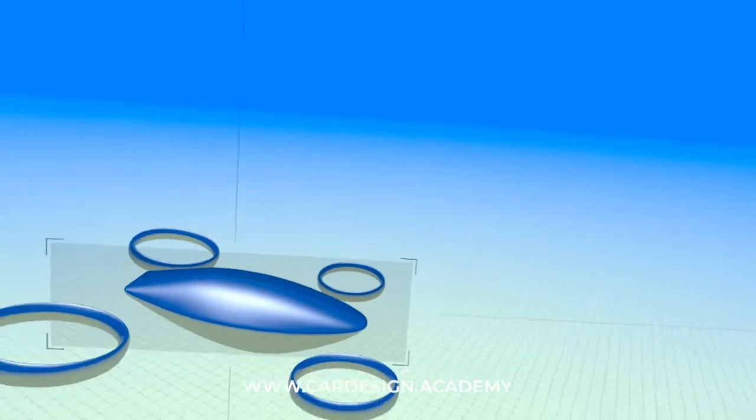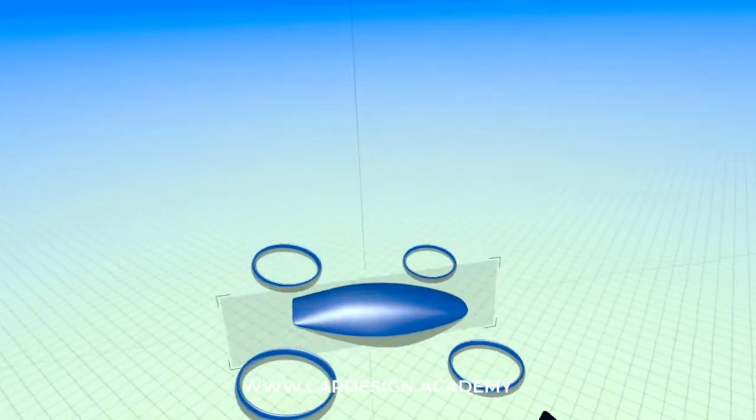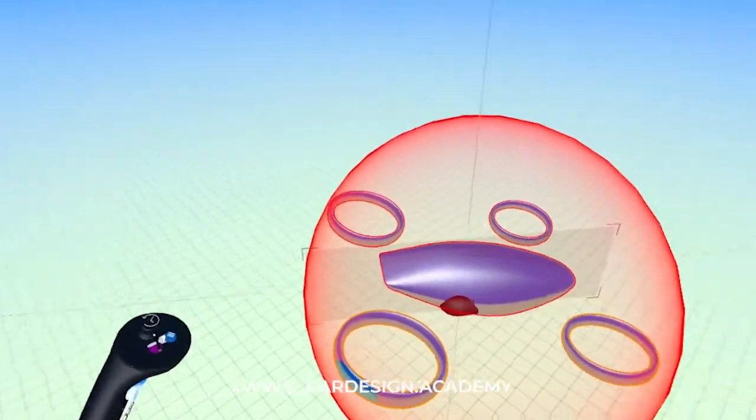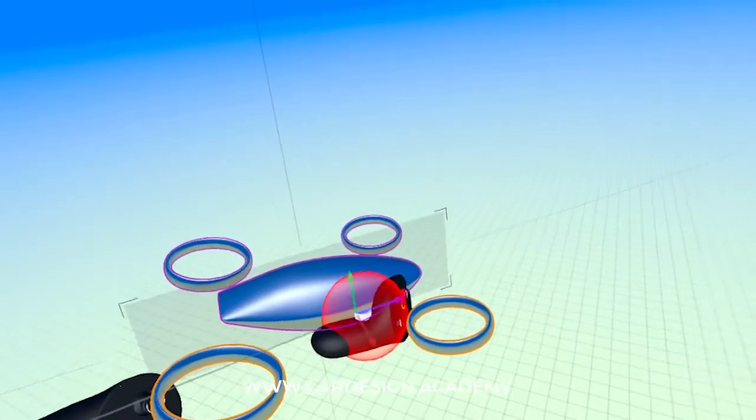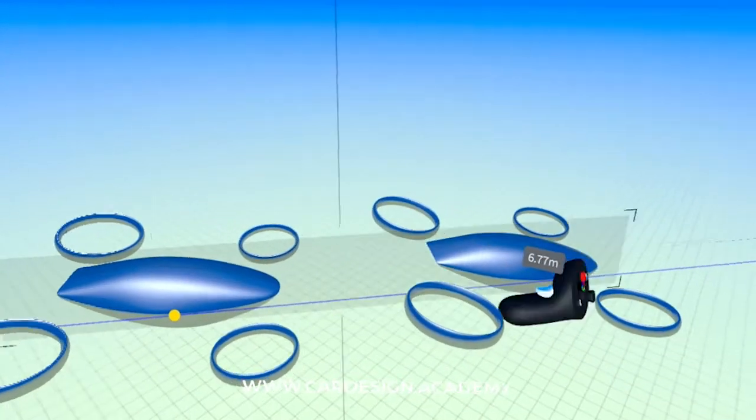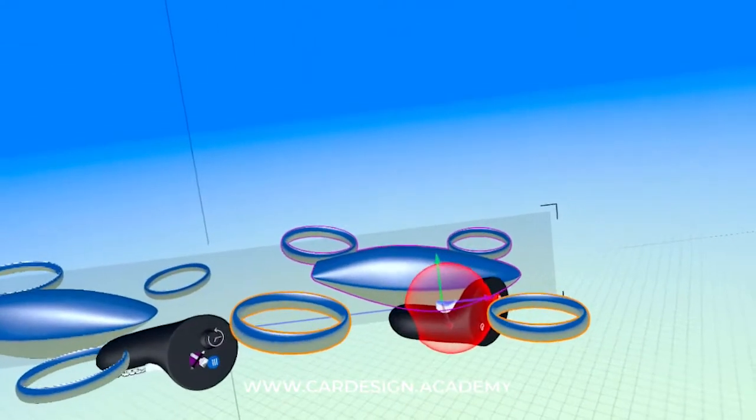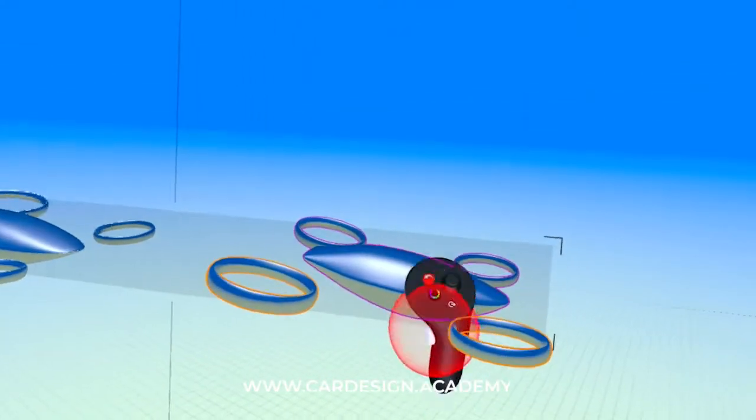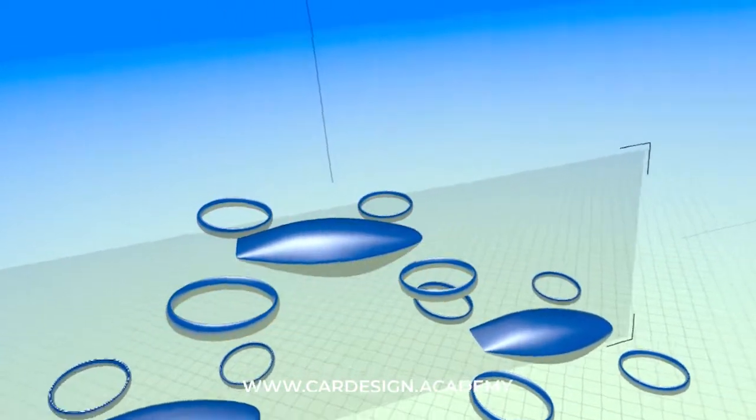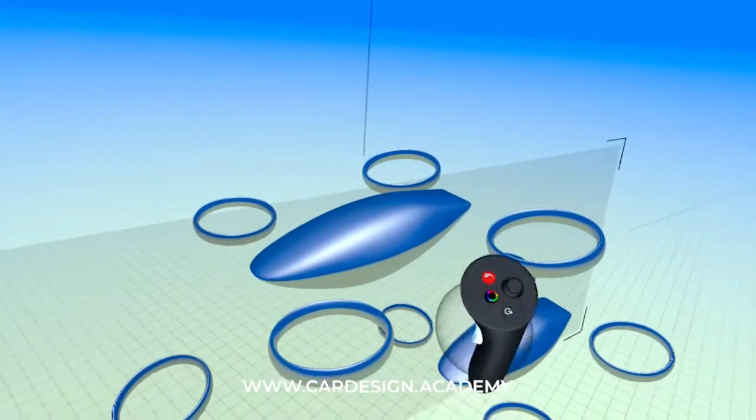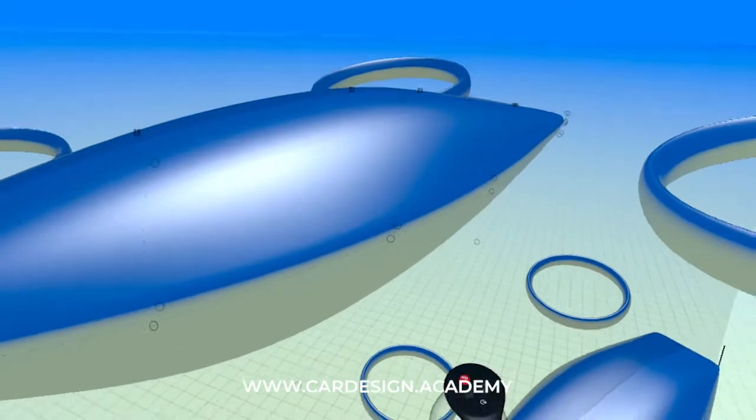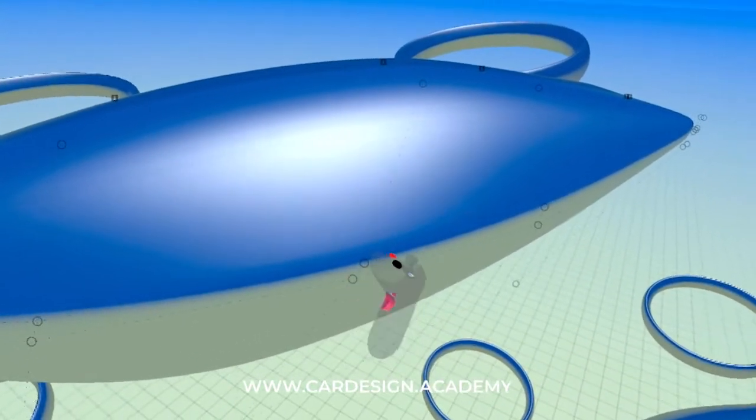Now, what I like to do is I like to do a lot of variations. So I'm going to grab this entire model, I'm going to group it and I'm going to make some duplicates. And then I can start to do variations. So turning on my control vectors, now I can start to push and pull points.